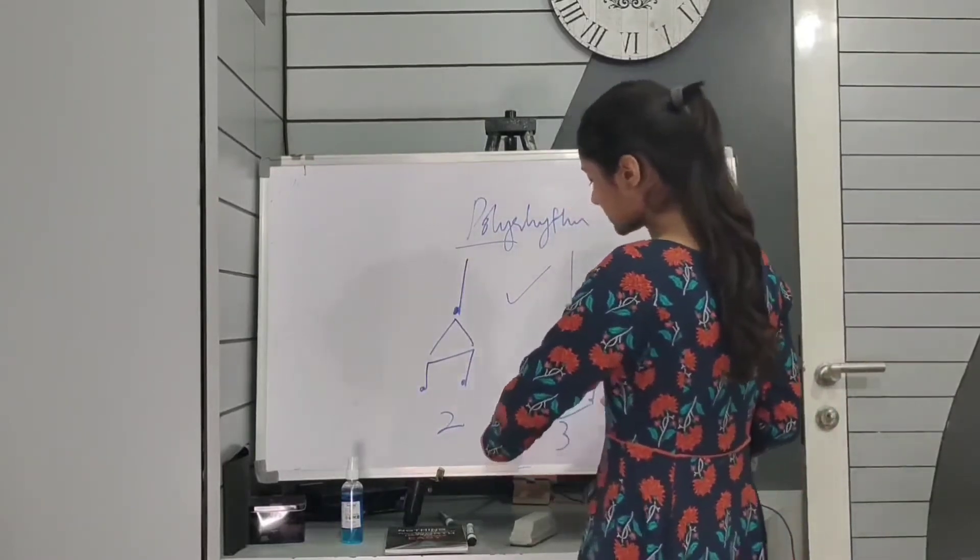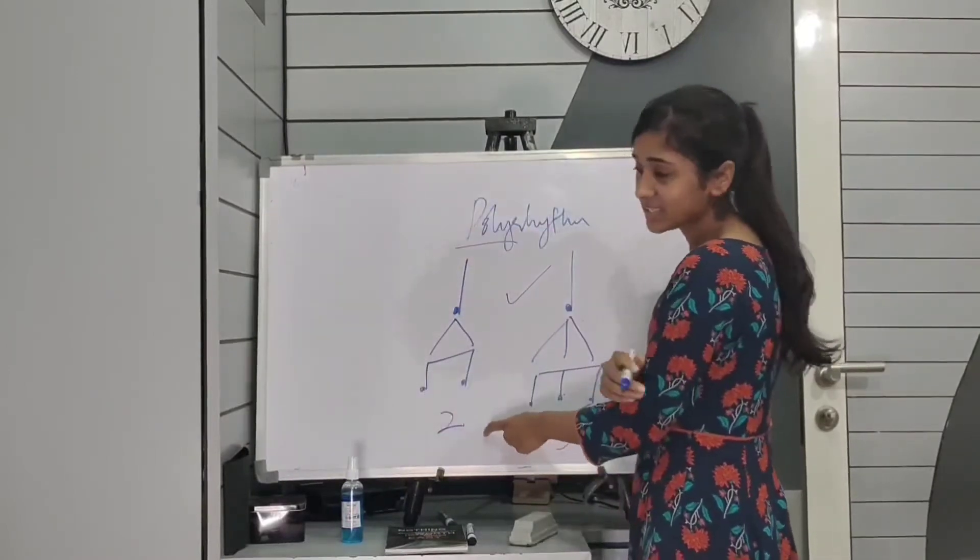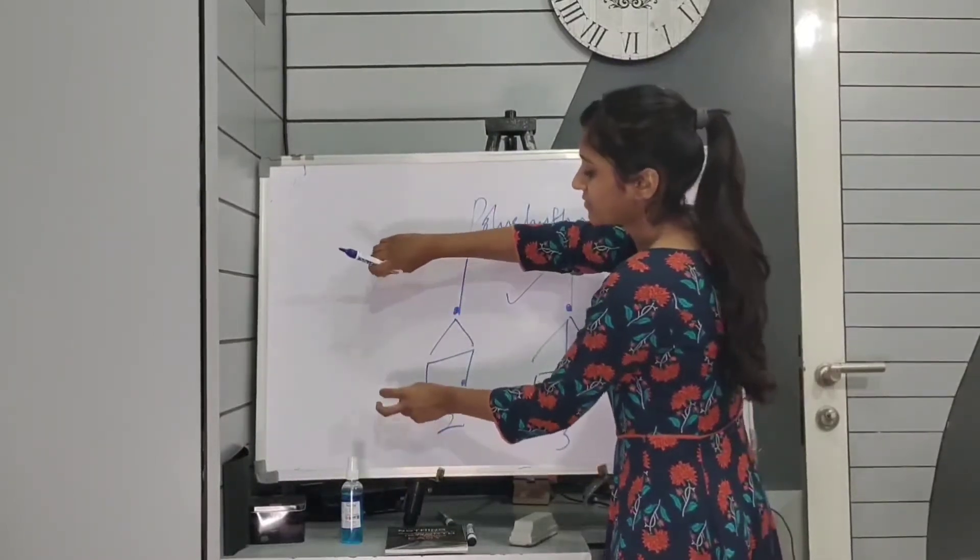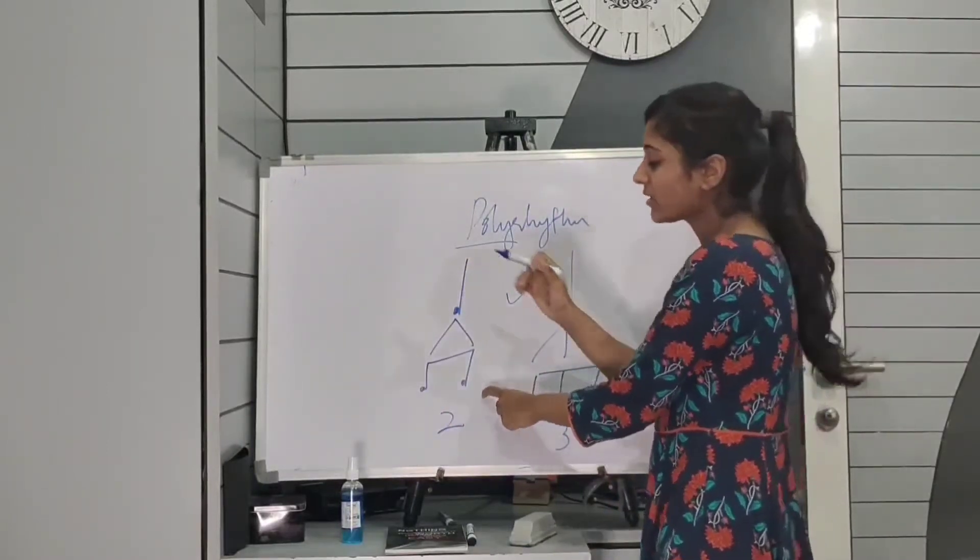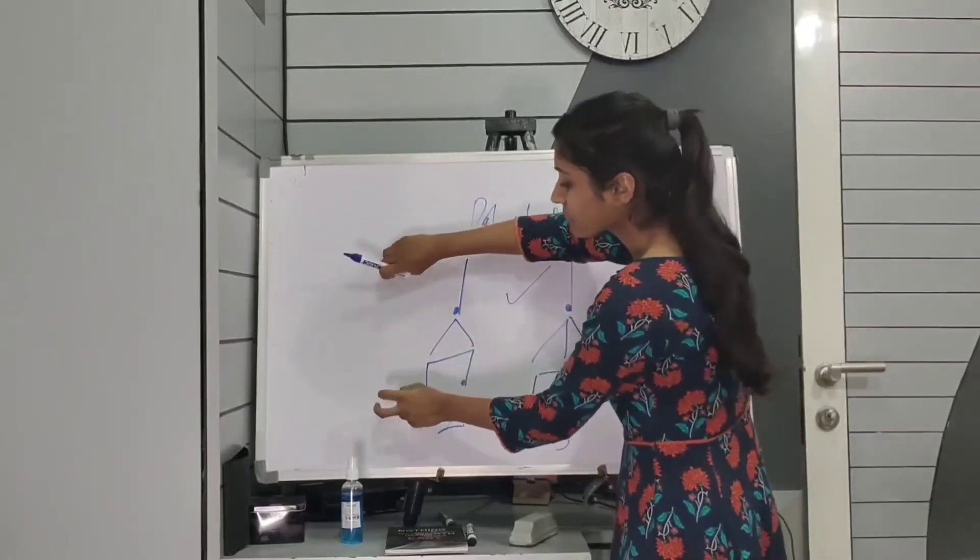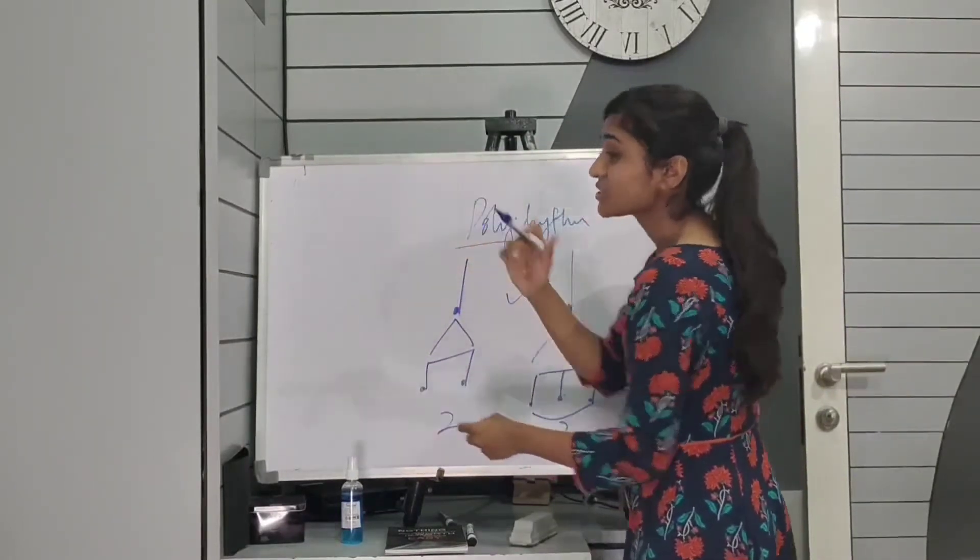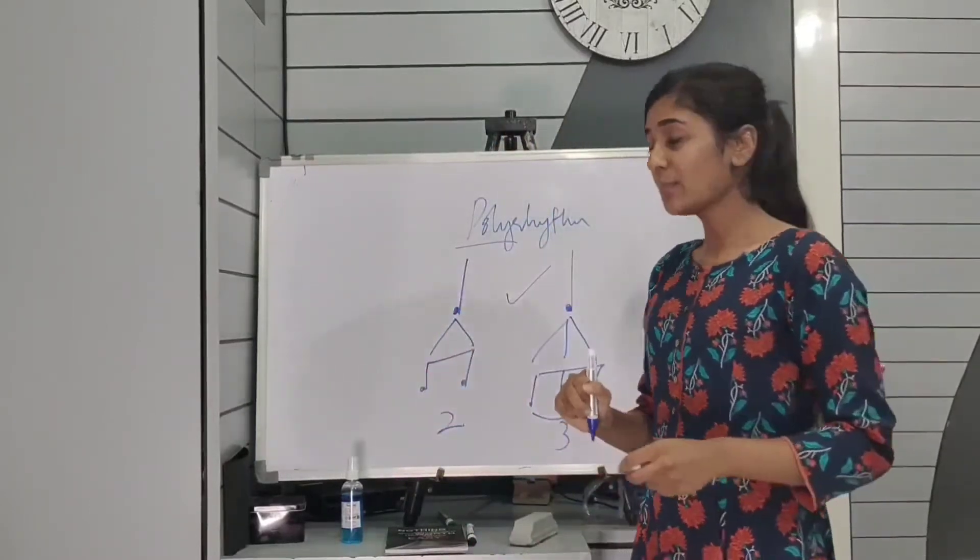Now this triplet will be played like one triplet, two triplet, three triplet. And these eighth notes will be played like one and two and three and. So if I play them together, it's going to sound like this. In the left hand I'll play triplets, right hand I'll play eighth notes. So you see here the notes are not coinciding each other, which gives us polyrhythm.